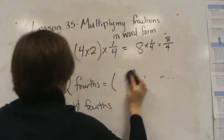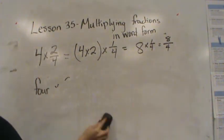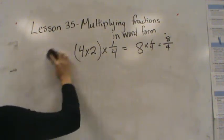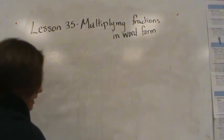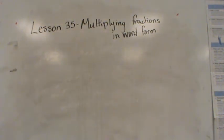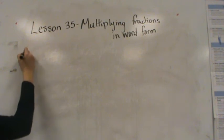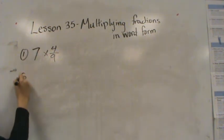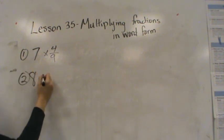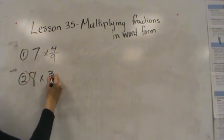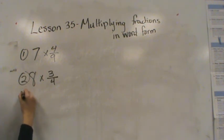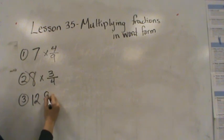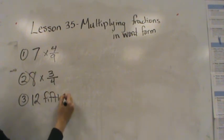Now it's your turn. I need to see these both in word form and in number form. Make sure you use these models to help you out — it will really help if you look back at your work. I would like you to complete these three problems: seven times four-ninths, eight times three-fourths, and twelve-fifths. Go ahead and do that tonight for homework and I'll see you tomorrow.